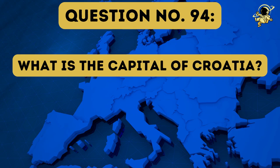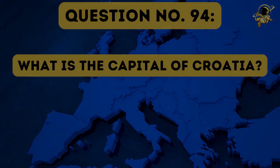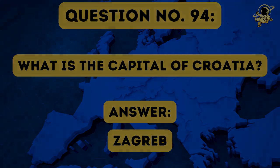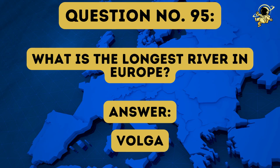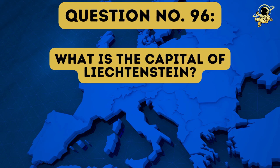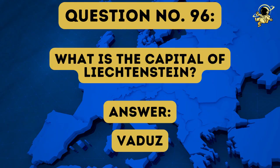Question number ninety-four: What is the capital of Croatia? The answer to question number ninety-four is Zagreb. Question number ninety-five: What is the longest river in Europe? And the answer to question number ninety-five is the Volga. And the answer to question number ninety-six is Vaduz — although many will probably say Liechtenstein isn't that small a country, but yes, they do have cities and a capital city.